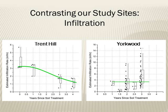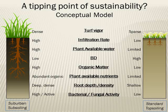In contrast to the declining performance at Trent Hill, the persistence of function at Yorkwood suggests there's a threshold intensity of our soil treatment practices that can result in a restored soil ecosystem process maintaining a high-functioning, healthy soil profile over time. We think there's a tipping point to sustainability where healthy soil with high capacity for plant-available nutrients and water can support a thick, vigorous turf cover. This turf will put down new roots each year while old roots decompose, returning organic matter to the soil profile and maintaining soil structure. The data at Yorkwood supports the idea that aggressive treatment can jumpstart a healthy soil ecosystem with restored hydrologic function maintained over time, even without fertilizer or irrigation inputs.